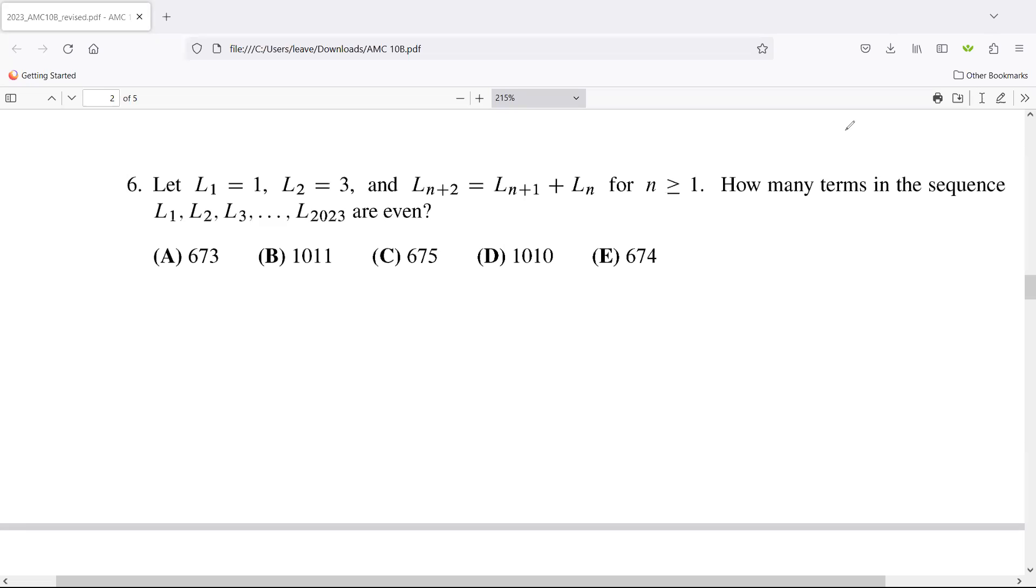Okay, let's continue with this next batch of rapid fire. The camera will be off now because my computer is too hot. So let L1 equal one, L2 equal three. These look like terms of a sequence. Let Ln+2 equal the sum of the previous two terms.